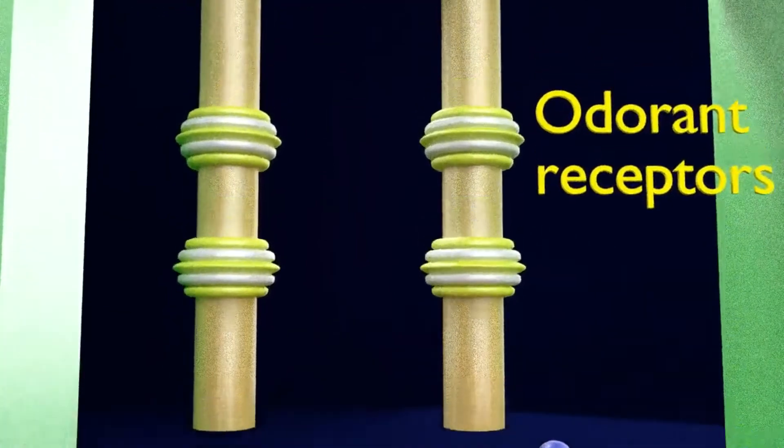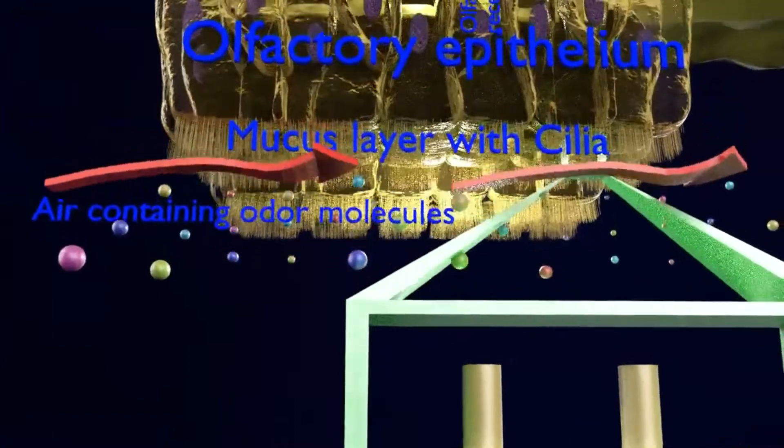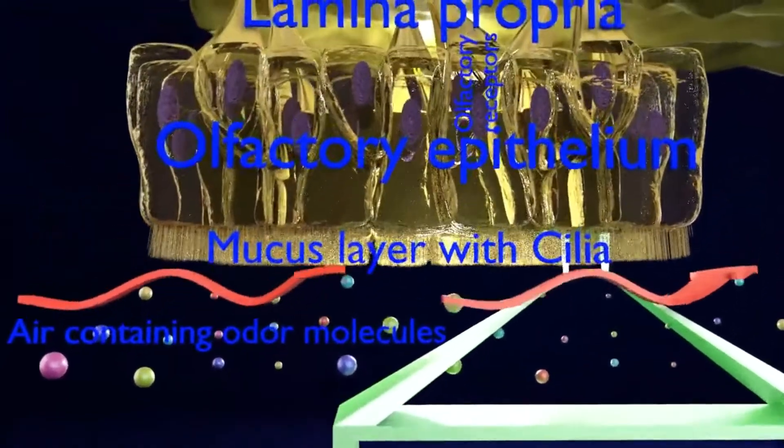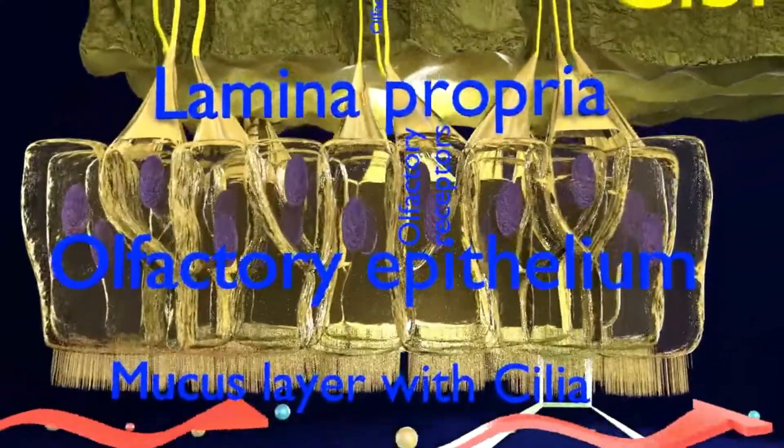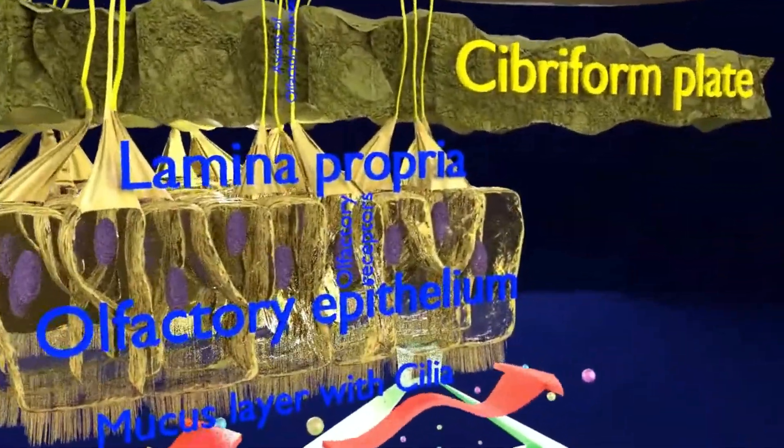Each neuron at the olfactory epithelium level represents a single type of protein receptor. When the odorants bind to the receptors and couple to G protein, a signaling cascade is activated.